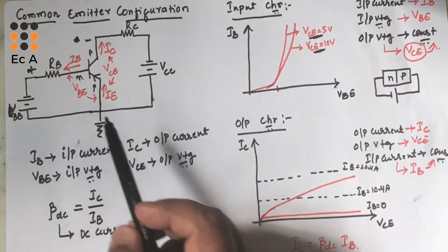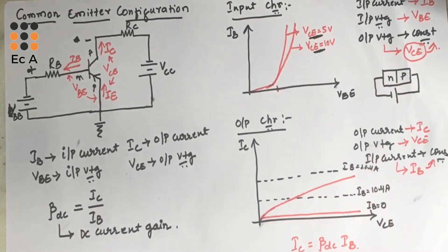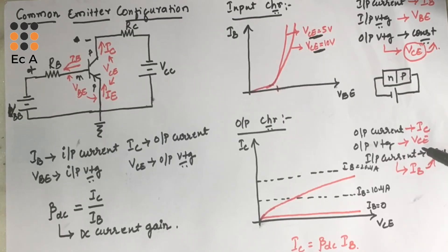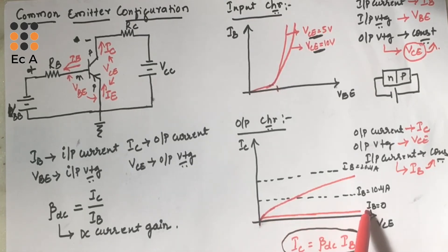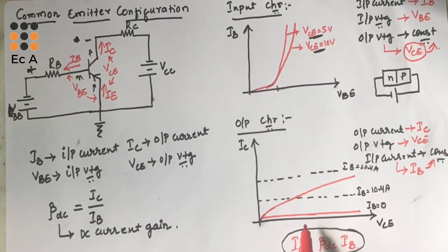Now let us understand the output characteristics of common emitter configuration. To understand the output characteristics, we consider the output current IC, output voltage VCE, and input current IB, which should be kept constant. Initially we make IB equal to zero. From the equation IC = beta DC × IB, if IB equals zero we expect IC to be zero, but we still get some current. This current is due to the reverse bias condition of the collector-base junction — it is the reverse leakage current.